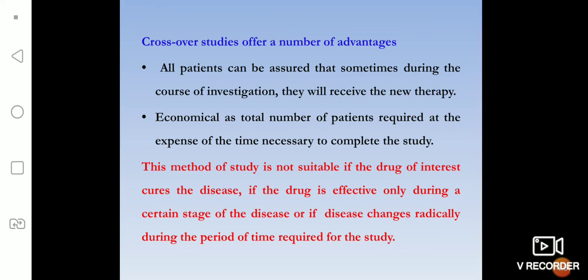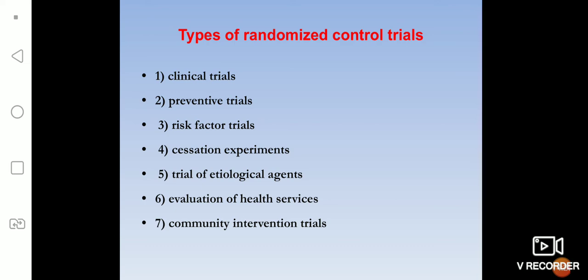The crossover study is not suitable if things happen before the complete outcome is observed, or if the drug is effective only during a certain stage. Crossover studies offer better advantages in other cases. The types of randomized controlled trials include: clinical trials, preventive trials, risk factor trials, suggestion experiments, trials of etiological agents, evaluation of health services, and community intervention trials. With this, randomized control trials come to an end. Please refer to the textbook and get back if you have any doubts. Thank you.